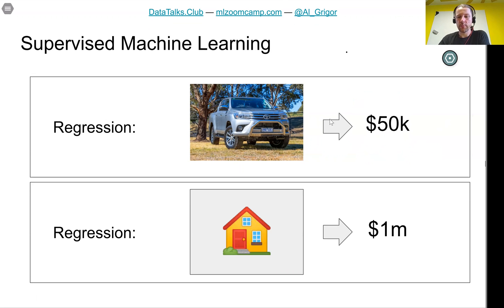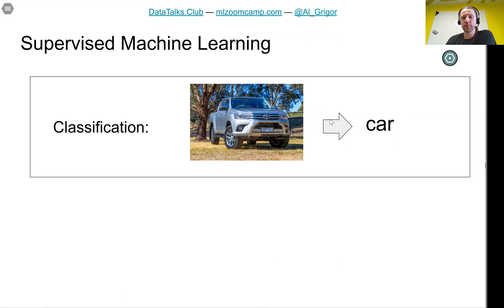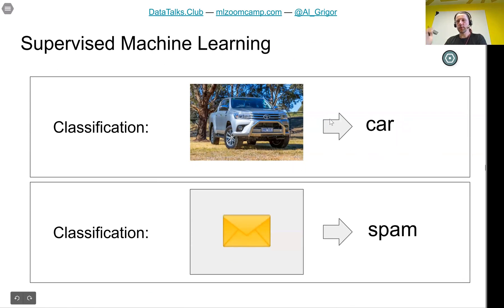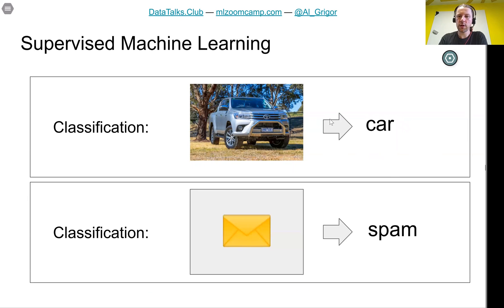Then there's a different type called classification, where we output a category rather than a number. For example, if we look at a picture and say 'this is a car,' that's a classification problem — the input is the picture, the output is the category 'car.' The spam example is also classification: based on the characteristics of an email, the function g produces a category, and the target variable is a category.